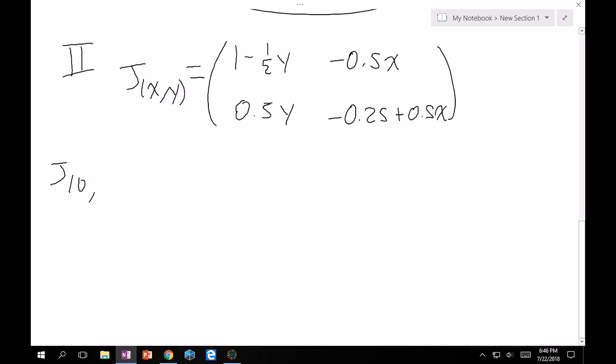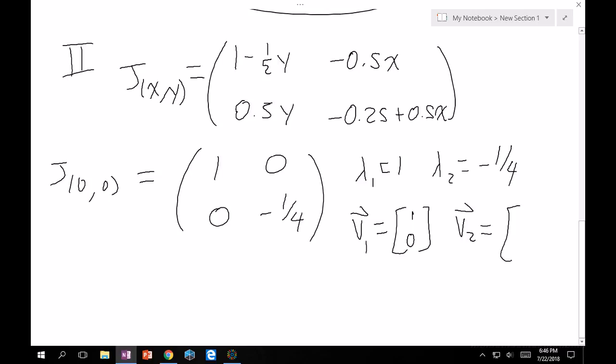So J of 0, 0 is going to give me 1, 0, 0, minus one-fourth. Clearly lambda 1 is going to equal 1. Lambda 2 will equal minus one-fourth. And then I'll give you eigenvectors as well. So V1 in this case will be 1, 0, and then V2 will equal 0, 1. Cool.